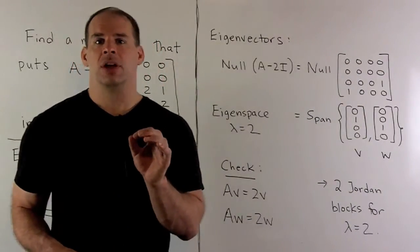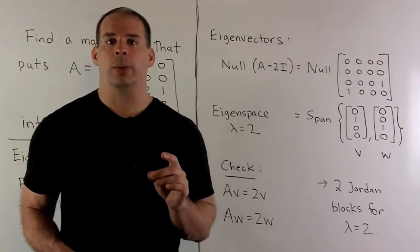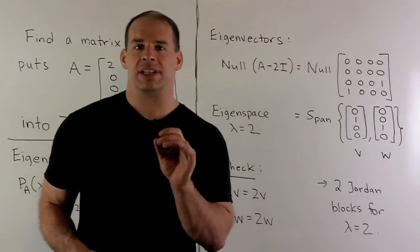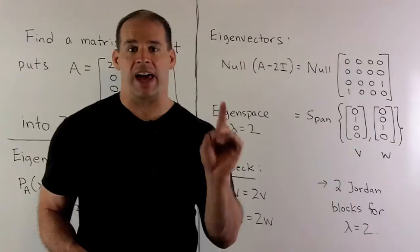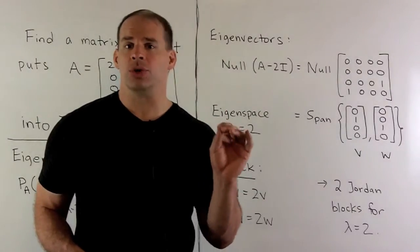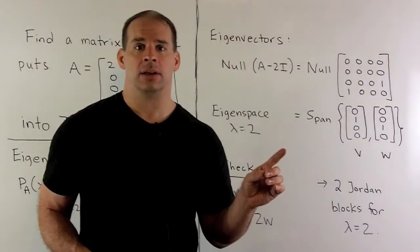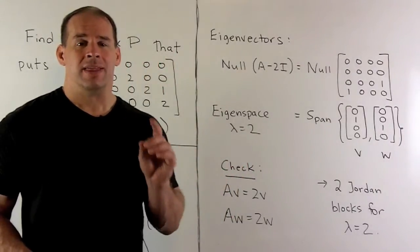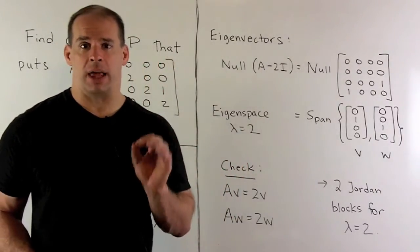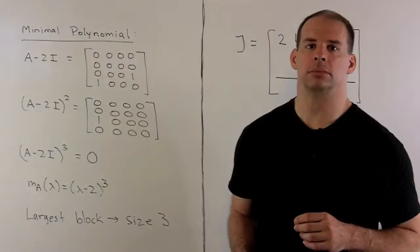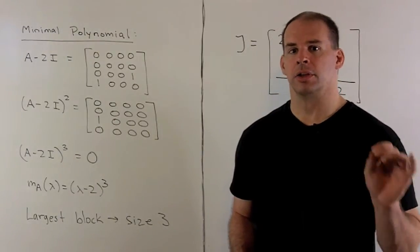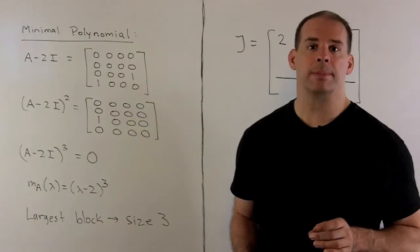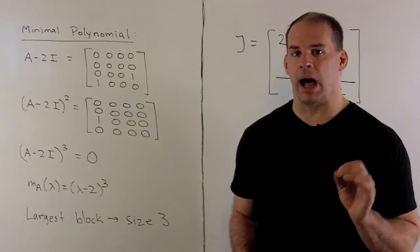That means the eigenspace has dimension 2. That's not enough to get a basis to diagonalize A, so we're going to use Jordan form instead. Because the dimension of the eigenspace is 2, that means we're going to need two Jordan blocks. Next, compute the size of the largest Jordan block. We find the minimal polynomial.